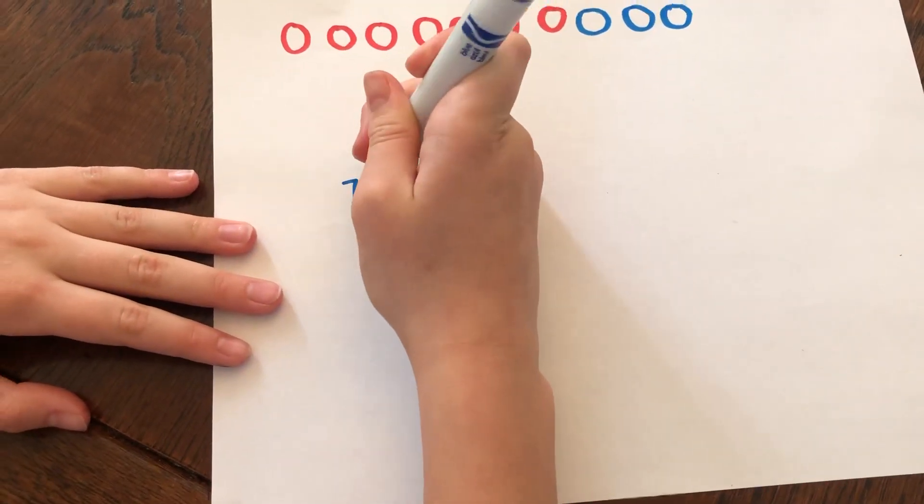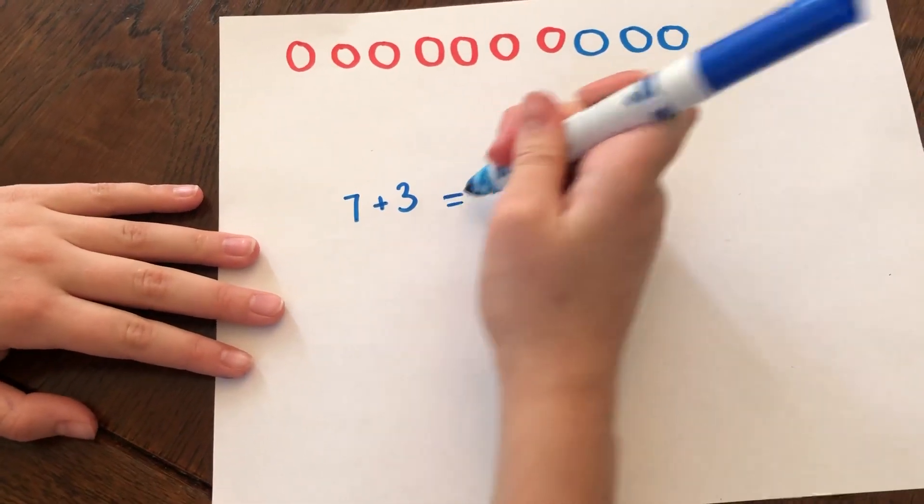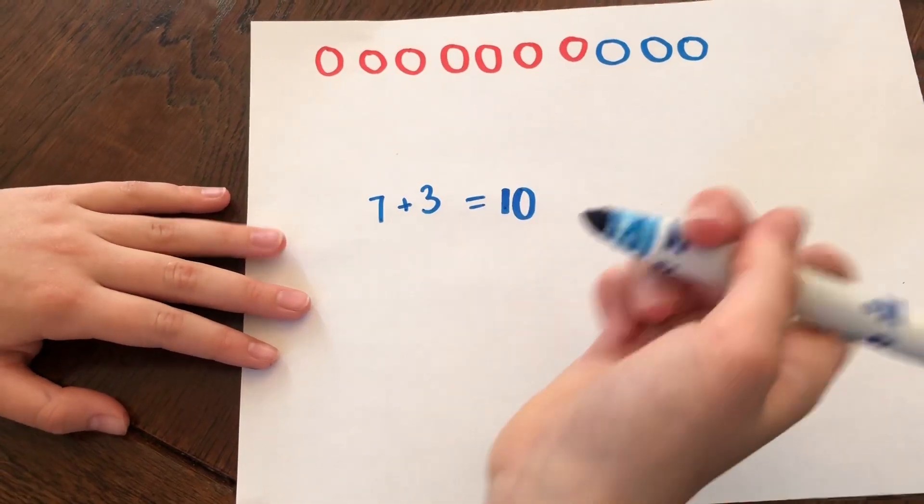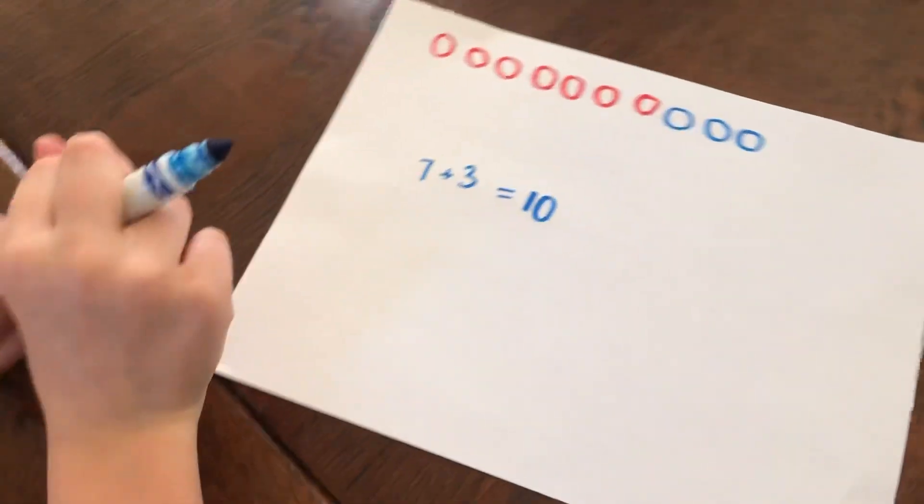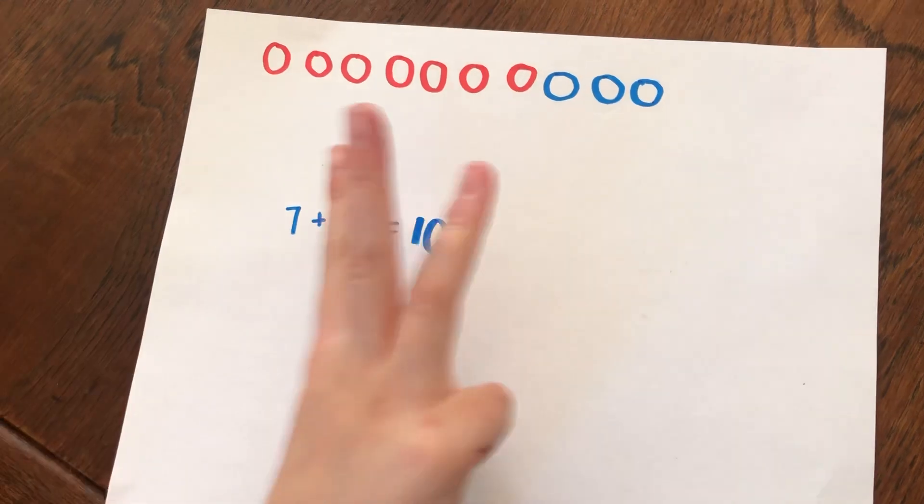...because we have three blue cars, equals 10. So now, how many blue cars did he have? Well, he actually had three of them.